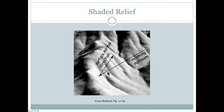The surface normal in darker areas makes an even bigger angle with the incoming sunbeam. So depending on how large that angle is — as the angle grows, it gets darker and darker — and this is how we make shaded relief maps, usually with a tool called hill shading in GIS.